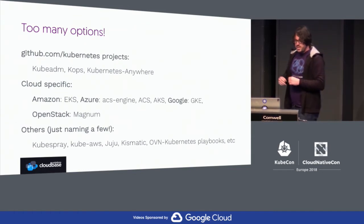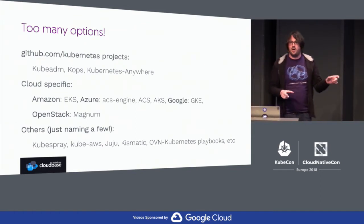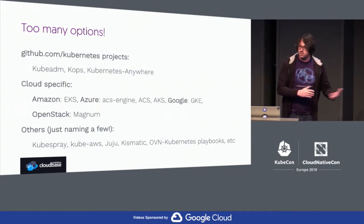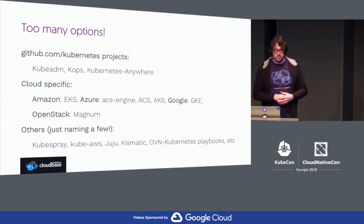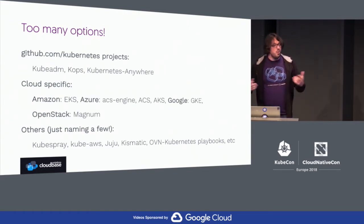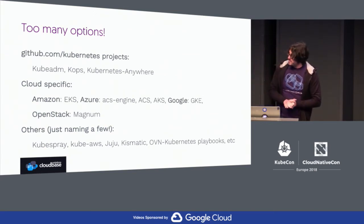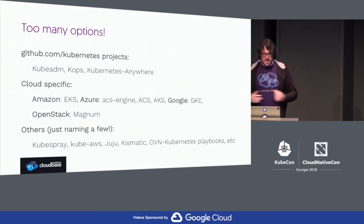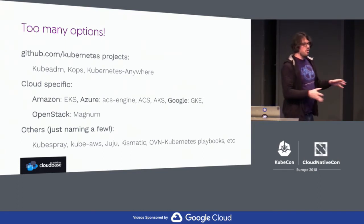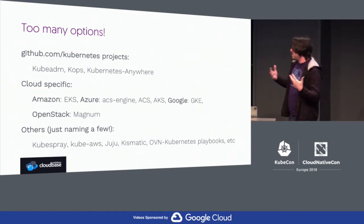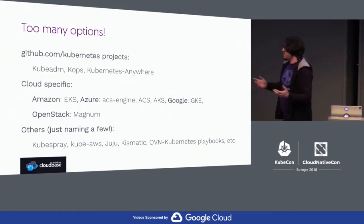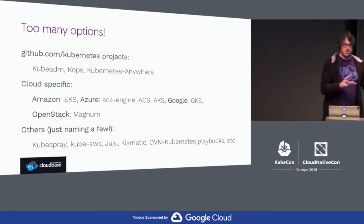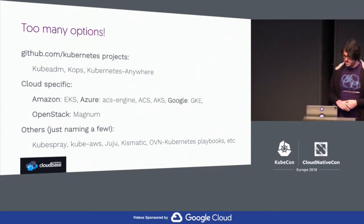I'm not adding Minikube there. Then you have the cloud-specific ones — every cloud provider gives you tools for deploying on their cloud: AKS, ACS Engine on Azure, GKE from Google, and OpenStack with Magnum. And then there are all the additional ones, because every other day somebody comes up with a new way to deploy Kubernetes, with various variations — some focused more on certain clouds, some on premise.